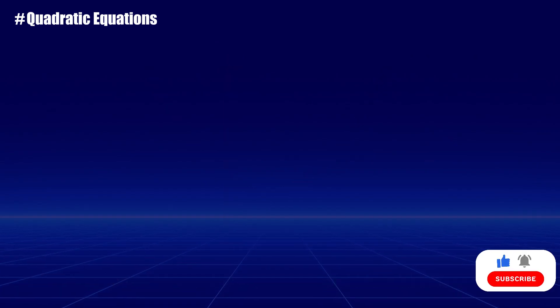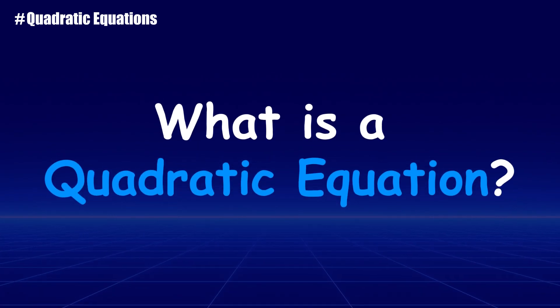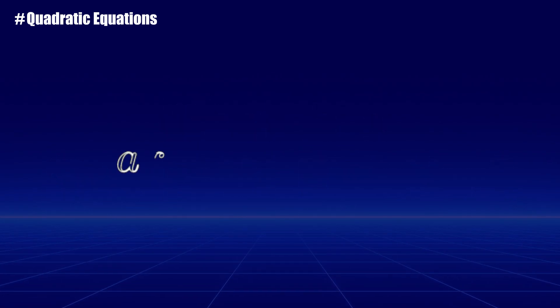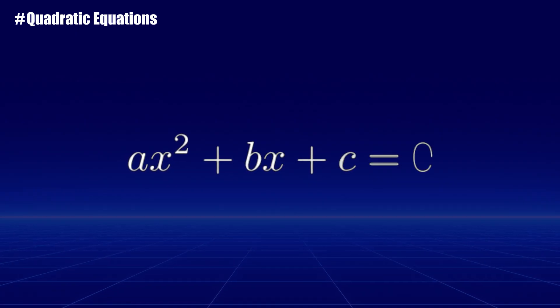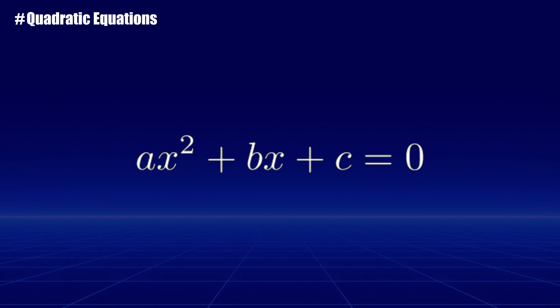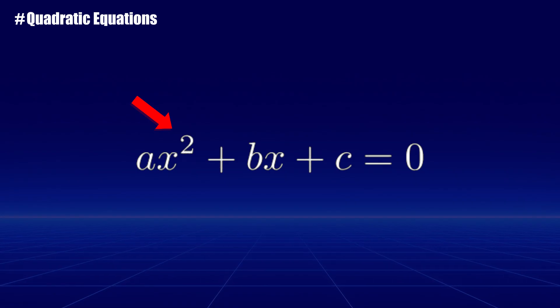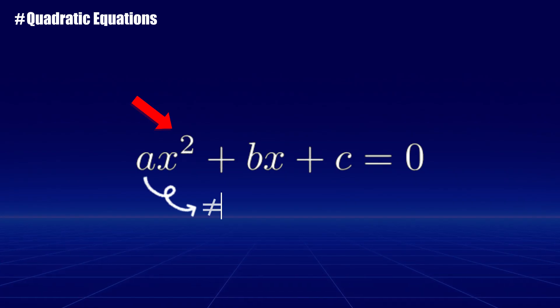Let's first start by talking about what a quadratic equation is. In simple terms, a quadratic equation is an equation that can be put in the form ax squared plus bx plus c equals zero. Note that the highest x power in a quadratic equation is two, and also that a cannot equal zero.